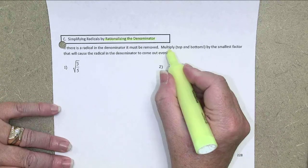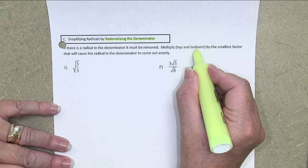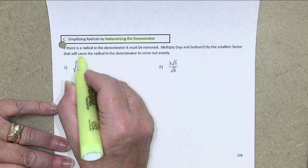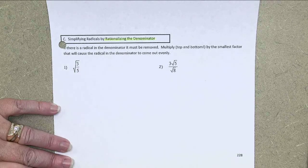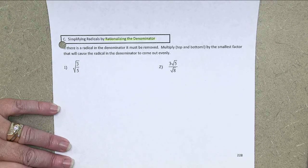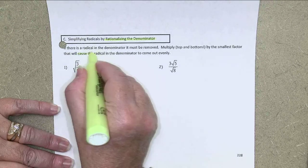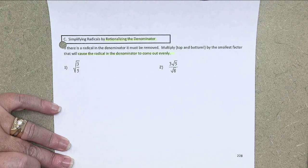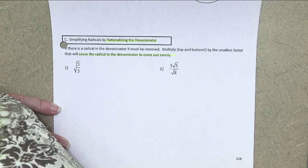Essentially, what we're going to do is multiply the top and the bottom by the smallest factor that will cause the radical in the denominator to come out evenly. Again, my whole goal is to make the radical in the denominator come out evenly.